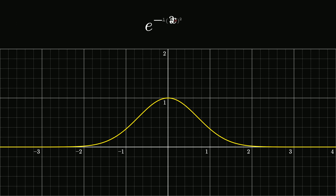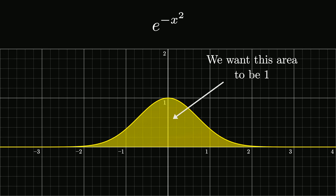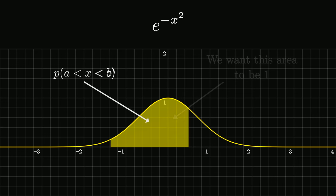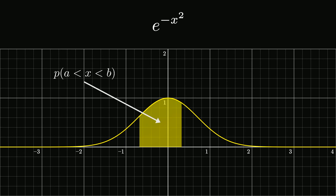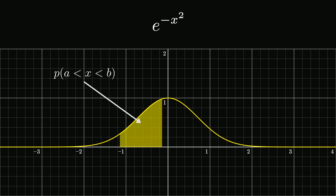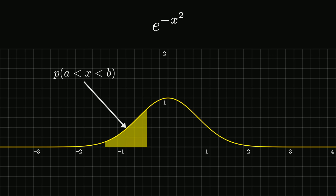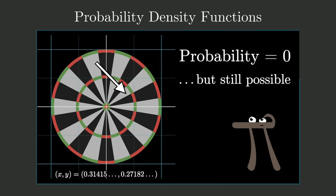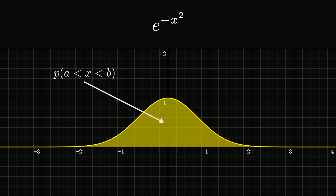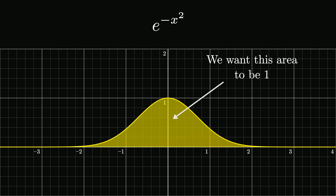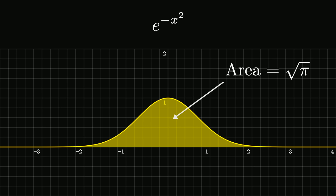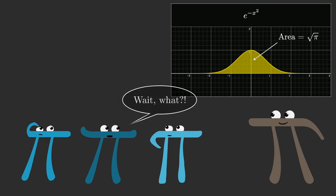Before we can interpret this as a probability distribution, we need the area under the curve to be 1. Unlike discrete distributions, when it comes to something continuous, you don't ask about the probability of a particular point — instead you ask for the probability that a value falls between two different values, and what the curve tells you is that that probability equals the area under the curve between those two values. These are called probability density functions. The main point is that the area under the entire curve represents the probability that some number comes up, which should be 1. As it stands with the basic bell curve shape of e to the negative x squared, the area is not 1 — it's actually the square root of pi. What is pi doing here? What does this have to do with circles?